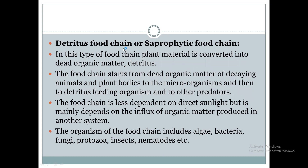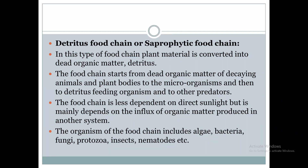The second type is the detritus food chain, also called the saprophytic food chain. In this food chain, plant material which is converted into dead or decayed organic matter — after the decaying of plants, trees, or leaves — forms the detritus. The food chain starts from this dead organic matter or decayed organic material after the decay of animals or plants.